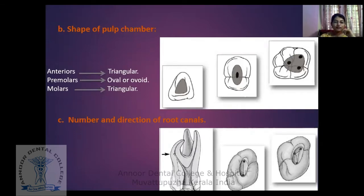In case of anterior teeth, the pulp chamber is triangular shaped. In case of premolars, it is oval or ovoid. And in case of molars, it is triangular in shape.